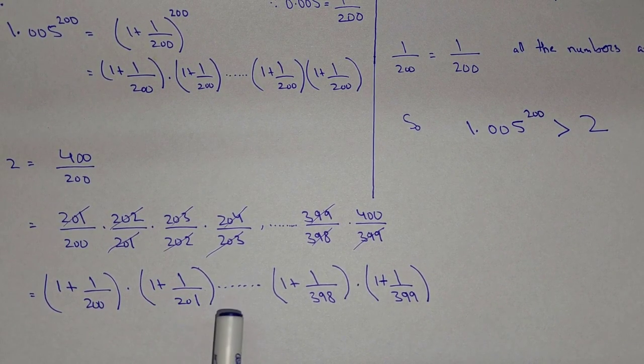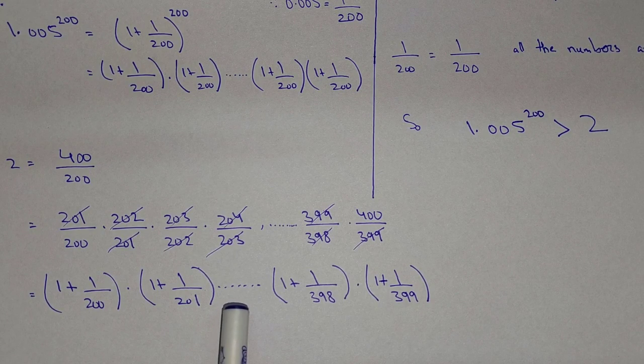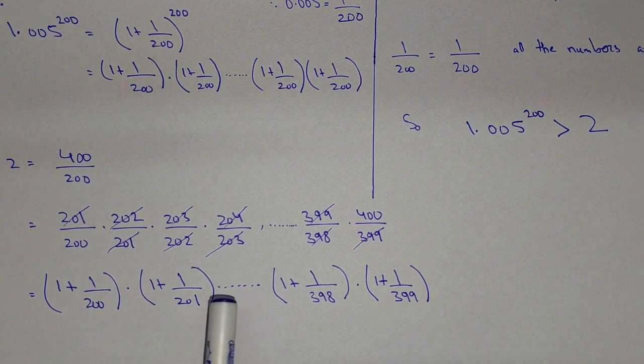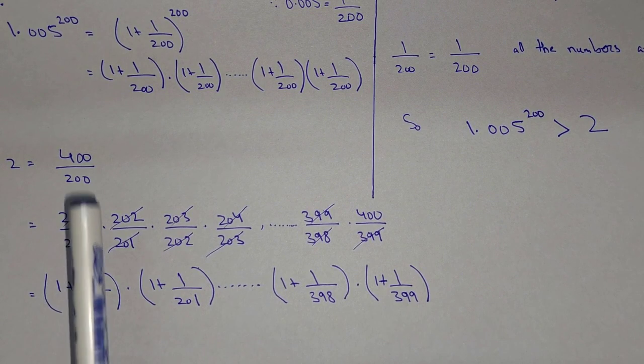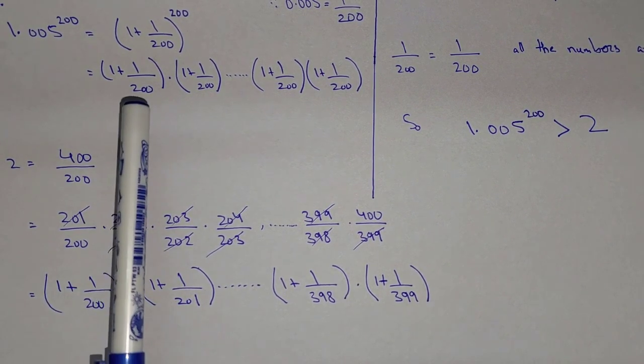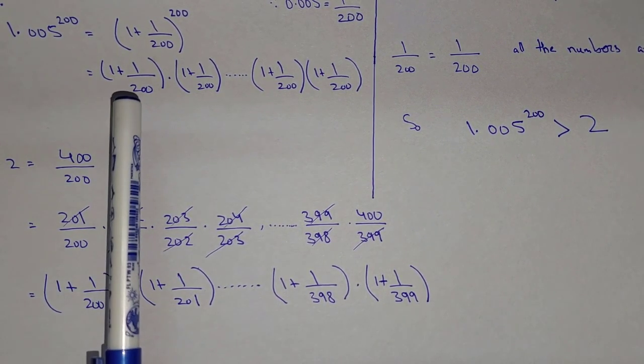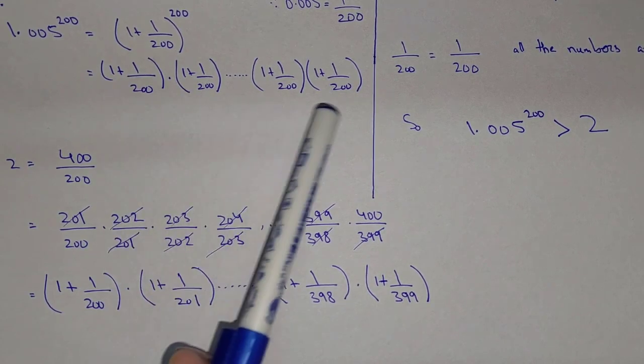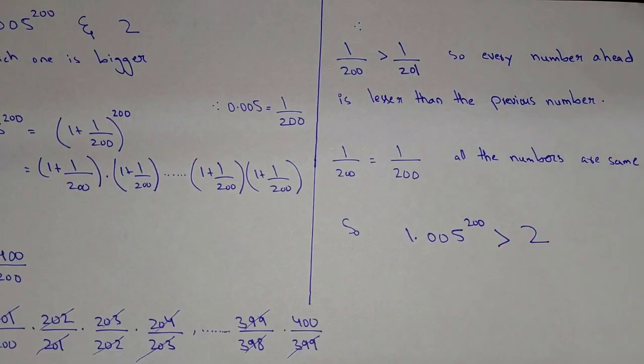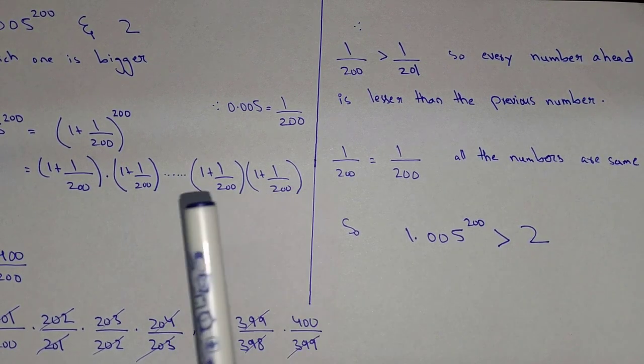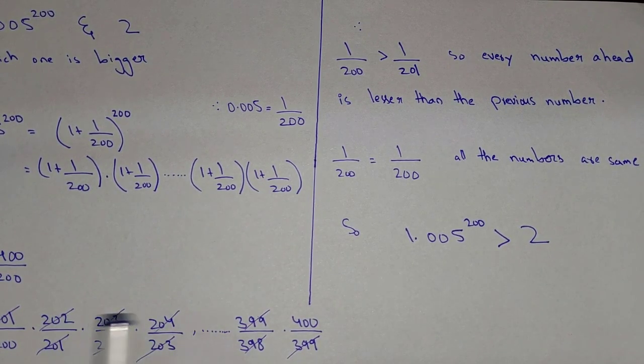And this number is bigger than the next number, so every number ahead is lesser than the previous number, while in this case you can see that 1 plus 1 over 200 and all these numbers are the same. So there is no need of calculation. You just understand that all these numbers are same and these all numbers are different. Every next number is lesser than the previous number.